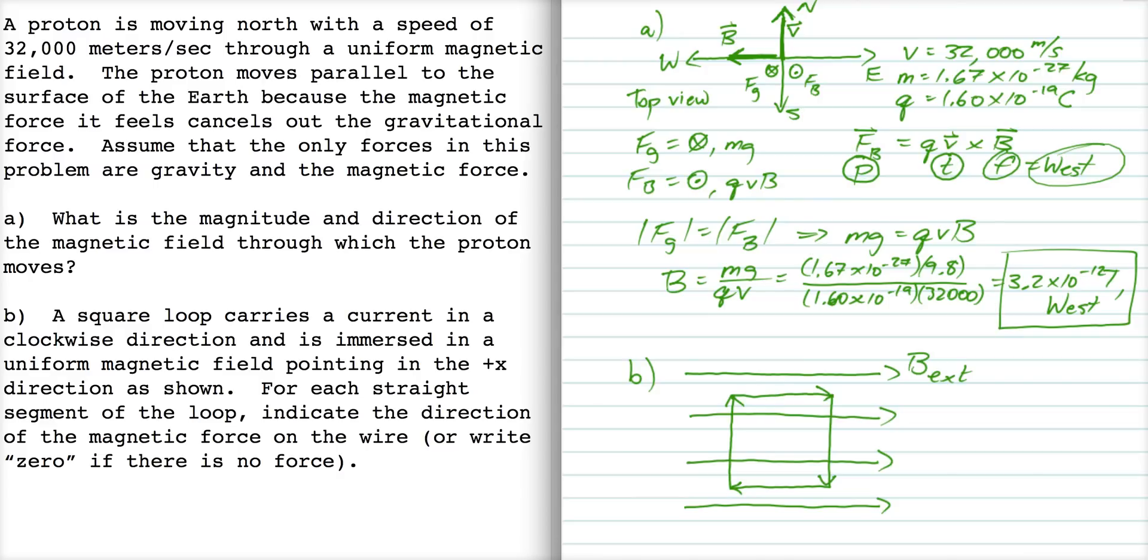For part B, we have a square loop, and the current is flowing in the clockwise direction, and it's immersed in this external field pointed in the plus x direction. For each straight segment, we have to indicate the direction of the magnetic force. Well, the magnetic force has a magnitude of qVB sine theta, where theta is the angle between the velocity vector and the magnetic field vector. It also can be written as ILB sine theta, where theta is the angle between the current and the magnetic field.